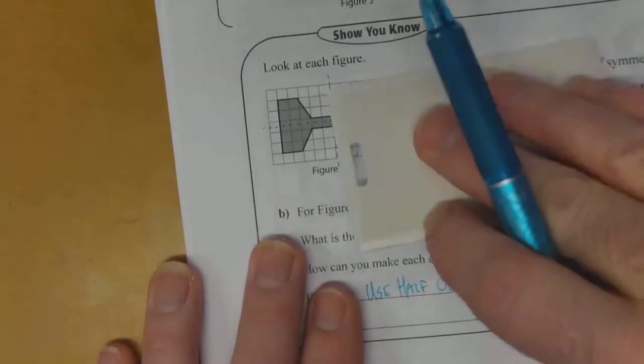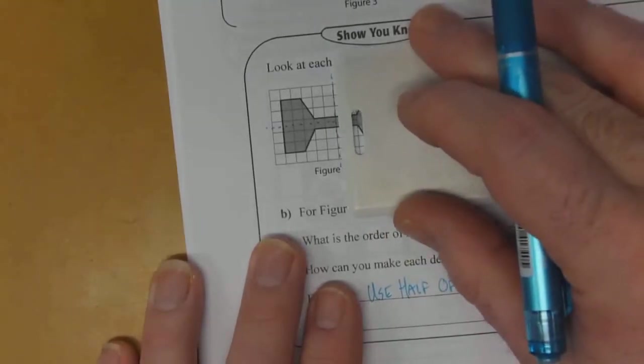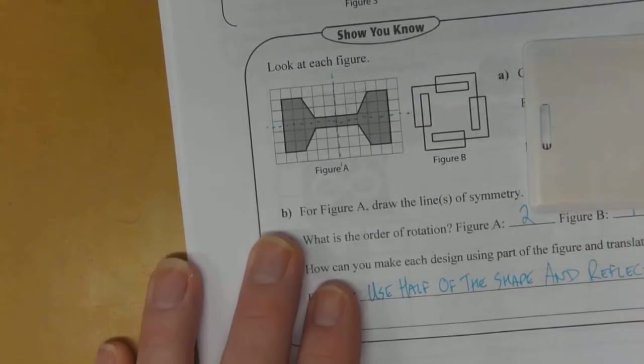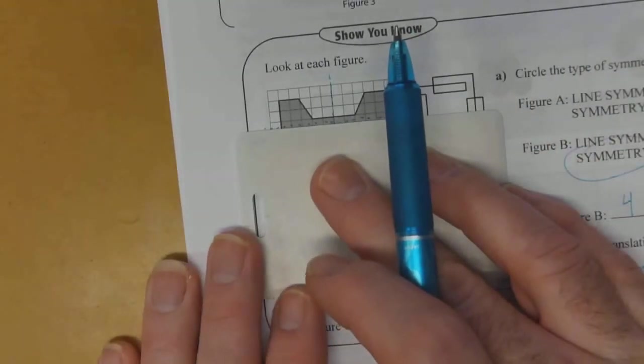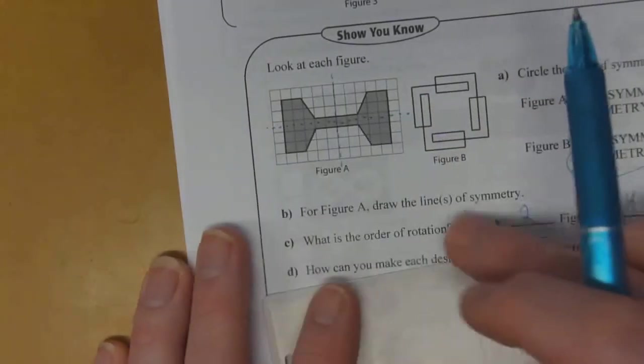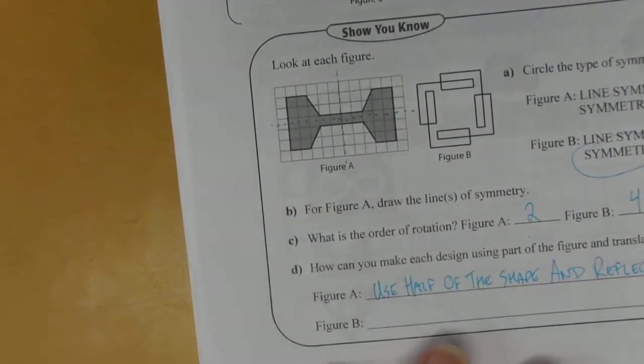So you could take the left side or the right side and you can reflect it on the vertical line of symmetry or you can take half, top half, and reflect it on the horizontal line to give you the bottom half. Either way, that works.